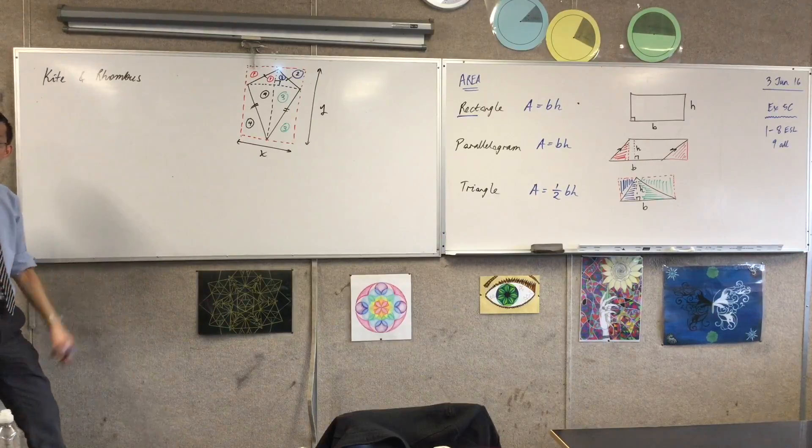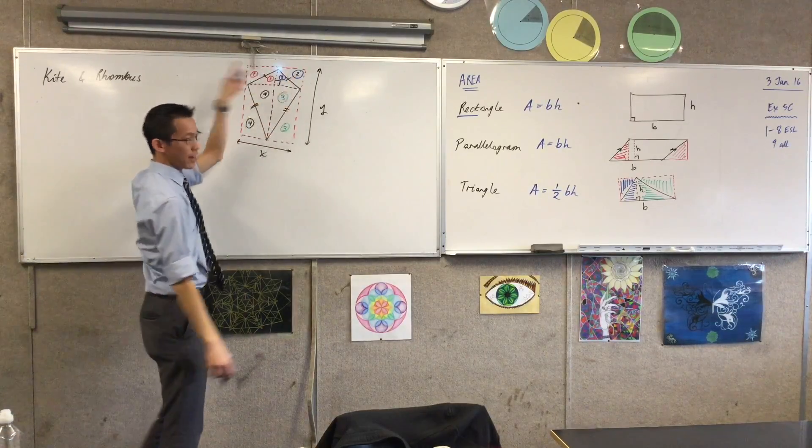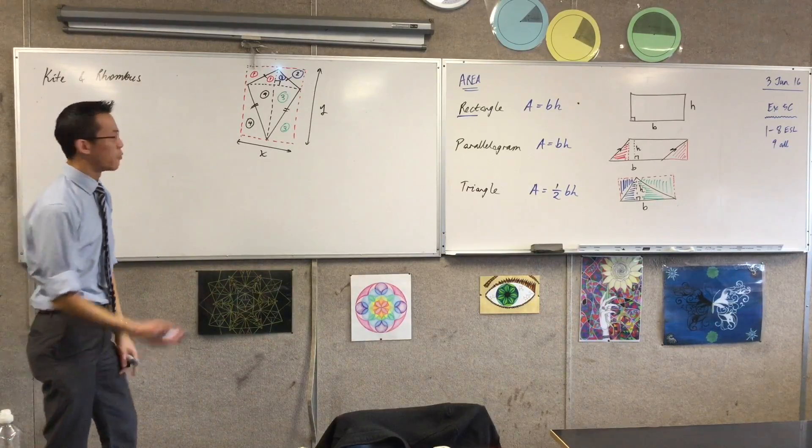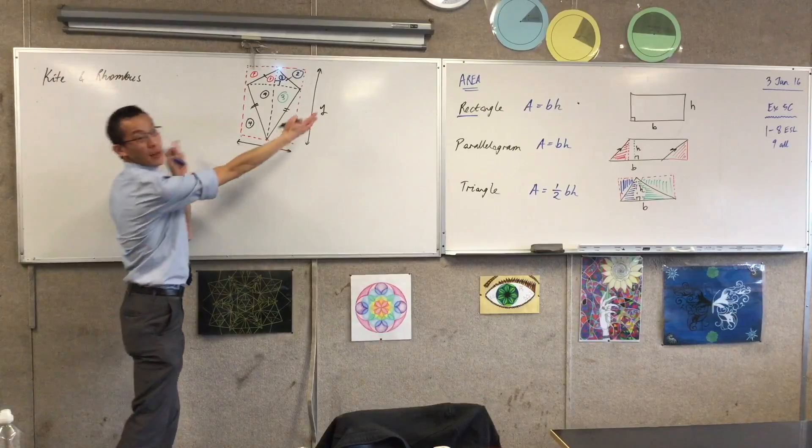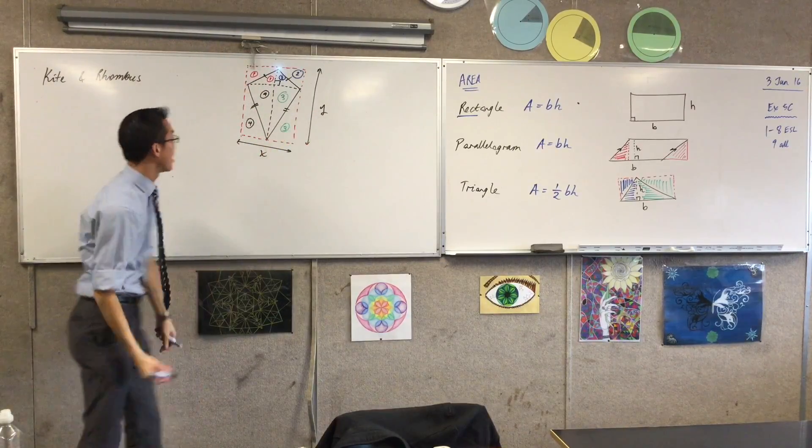So if you know the diagonals, if you can measure them out, again, what's the area of this rectangle, this big rectangle I've just made? X times y times half. Yeah. Well, okay, wait, hold on. The rectangle is x times y, right? But what I want, of course, is the kite inside it, which is half the size.